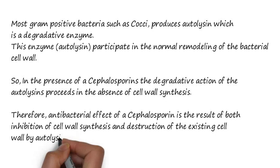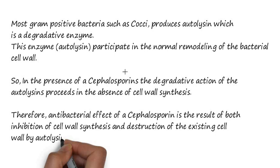To explain again: transpeptidase causes cross-linking of peptidoglycan layers. Gram-positive bacteria such as cocci produce autolysin, normally present for remodeling of the bacterial cell wall. When cephalosporin is given, it disrupts cell wall synthesis by inhibiting transpeptidase, so there is no cross-linkage and no integrity of the cell wall. Since autolysin is still being produced normally, its degradative action proceeds in the absence of cell wall synthesis.